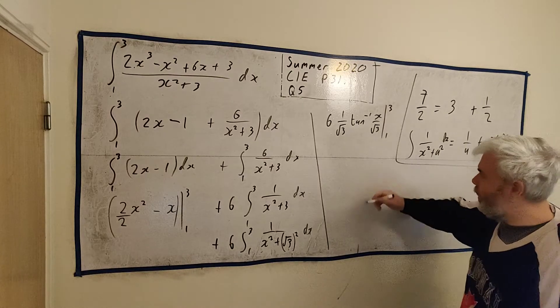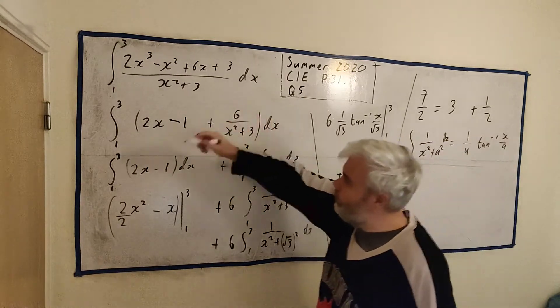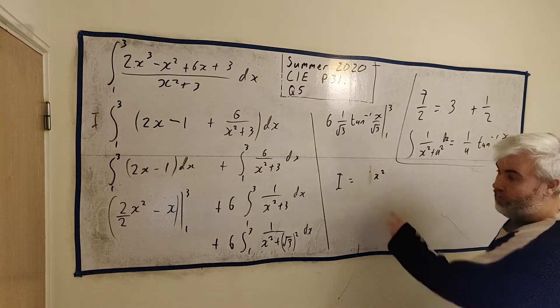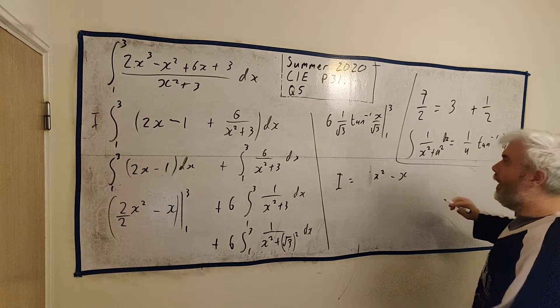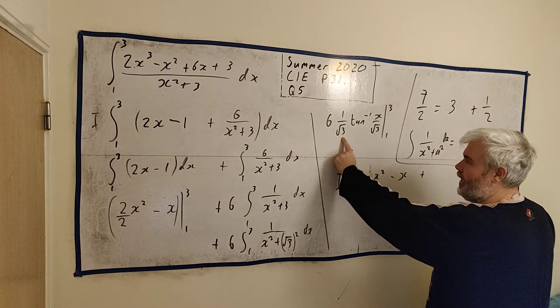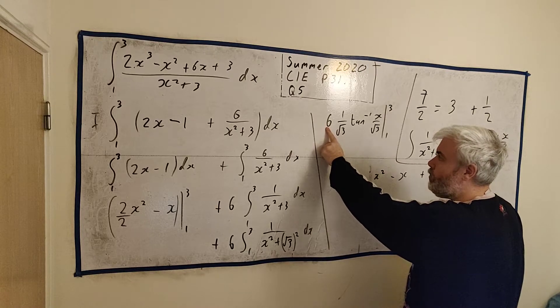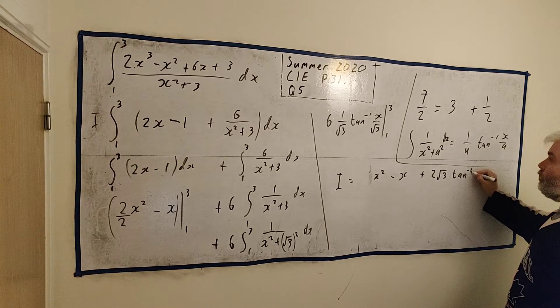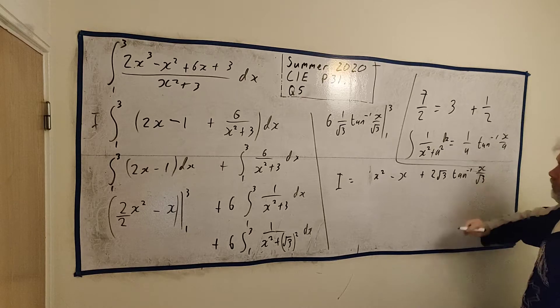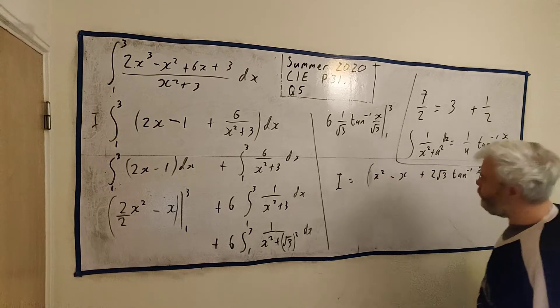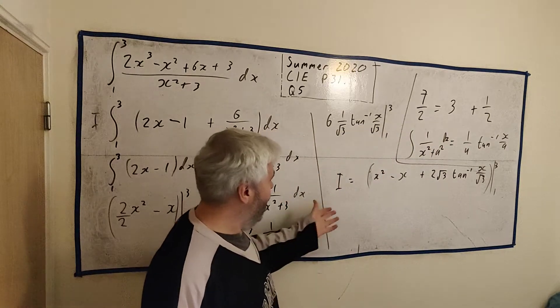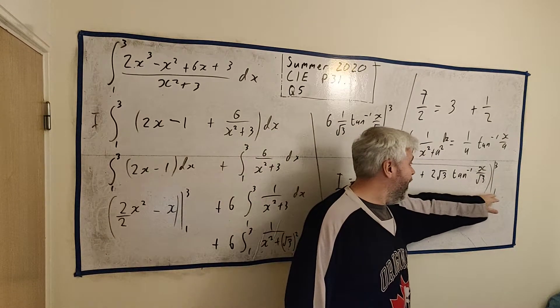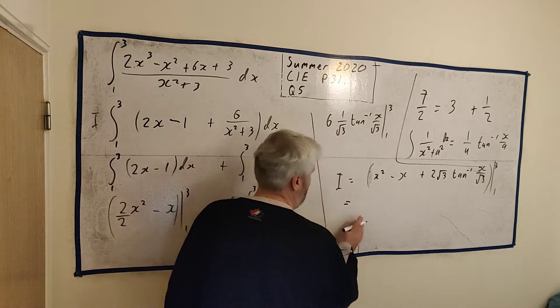Let me write it out one last time. The integral i, we'll call the whole thing i. The integral i is equal to x squared minus x plus, we can divide the square root of 3 in. This is made up of square root of 3, square root of 3, and a 2. So we're left with 2 square root of 3, tangent minus 1 of x over square root of 3. All of this gets evaluated between 3 and 1. I just need to put 3 into every x, and then I need to take away when I put 1 into every x.